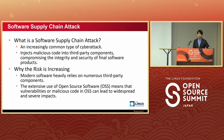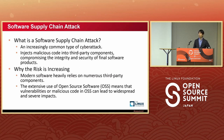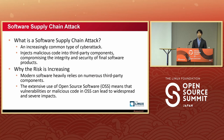Software supply chain attack is an increasingly common type of cyber attack. It's not a direct attack, but it injects malicious code into third-party libraries, compromising the integrity and security of the final product. The reason this risk is on the rise is that modern software heavily relies on numerous third-party components — mainly open source. Vulnerabilities or malicious code in open source can lead to widespread and severe impact on our society.